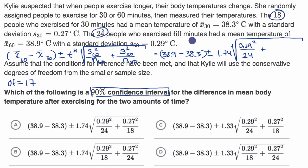plus the sample standard deviation for the 30-minute group, so that's 0.27, 0.27 squared, divided by the sample size for the 30-minute group, divided by 18.